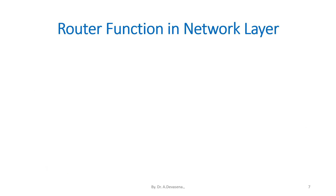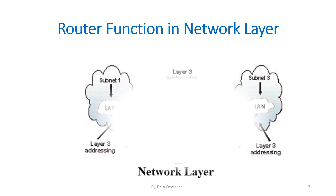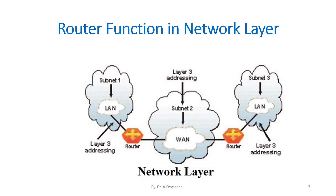A router function in network layer representation is shown here. In this network layer, we have two LANs. These LANs are connected to the WAN through the router, as indicated in this diagram.